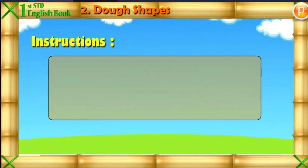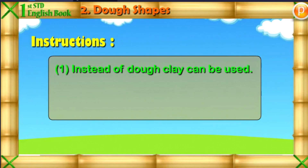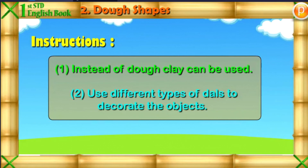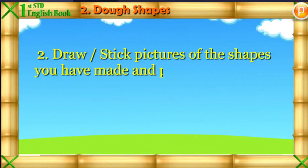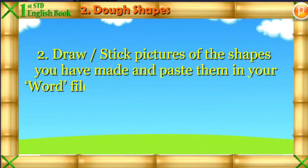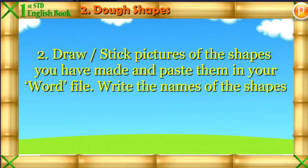Instructions: Instead of dough, clay can be used. Use different types of dals to decorate the objects. Draw or stick pictures of the shapes you have made and paste them in your word file. Write the names of the shapes below the picture.